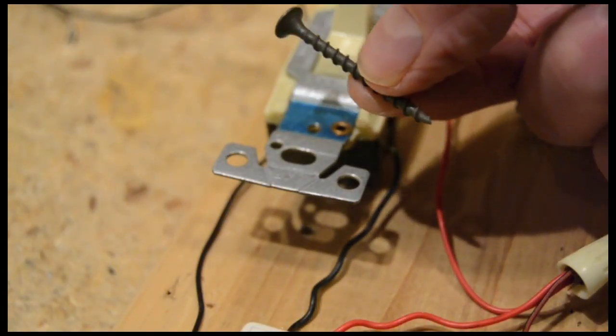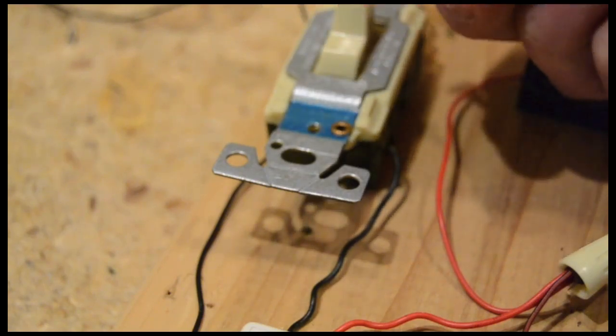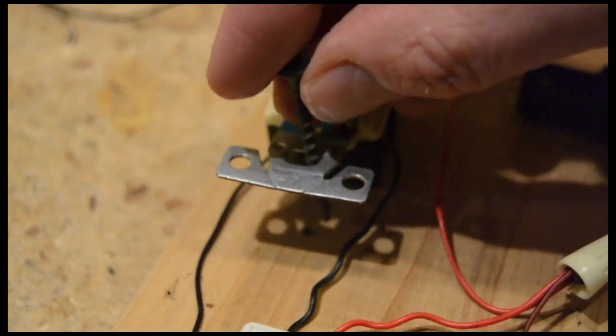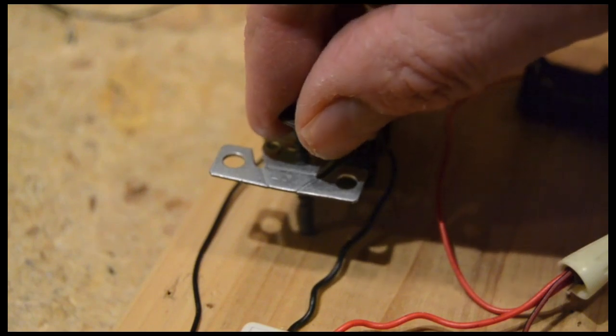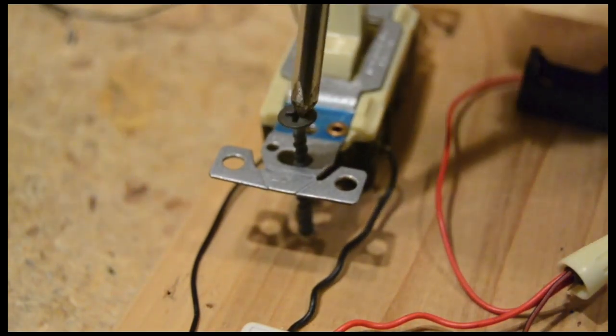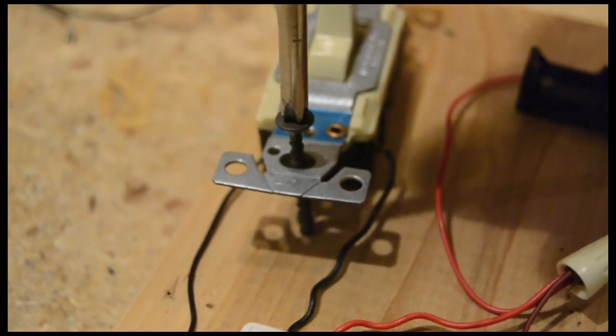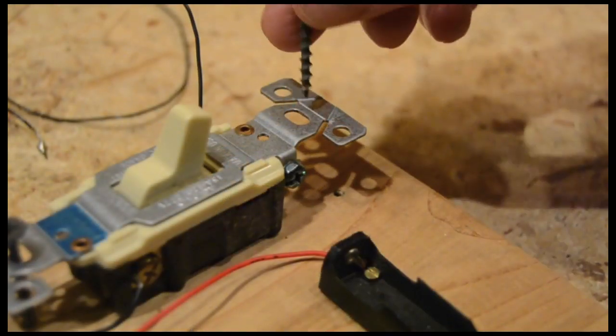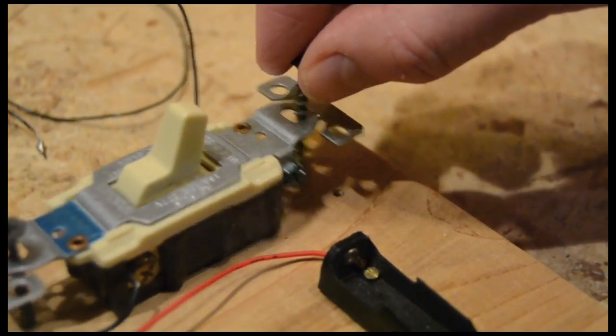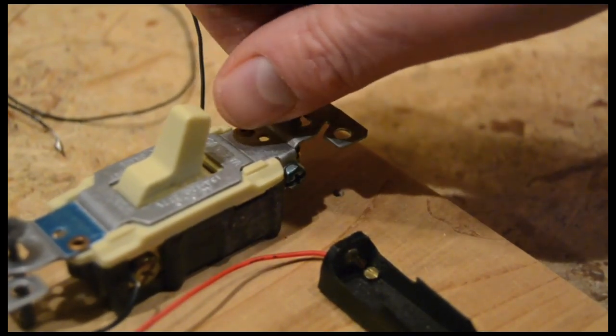Now screw the light switch in place. I'm using some old drywall screws. I'm using a total of three screws to make sure the switch stays firmly in place.